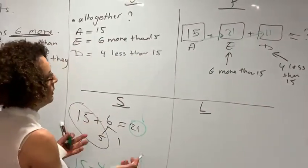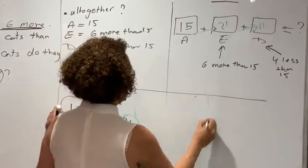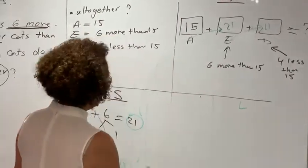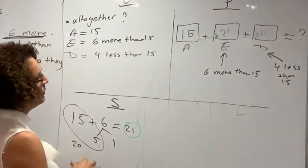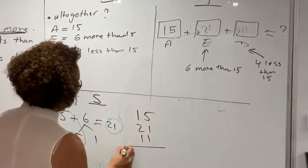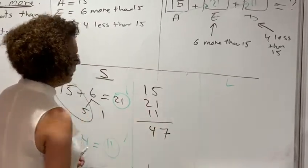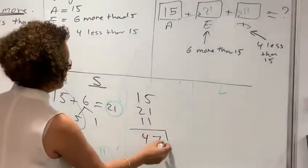Now we have three quantities to add. So we're going to move this a little bit here. And now we are adding 15, 21, and 11. That is 7 and 4. So we have 47 as our answer.